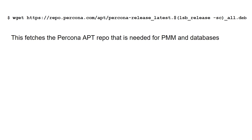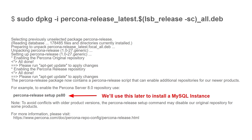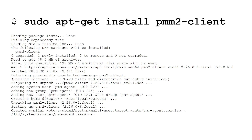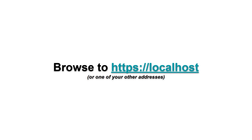Now we need to get the Percona APT repo that we're going to need to install PMM and any Percona branches of the databases that you want. Notice that it warns you how to set up MySQL, and we'll follow that later. Once we've installed the new repo, we have to run apt-get update. Once we have the repo ready, we can use it to install the PMM2 client. Once we have the client, we need to configure everything — we're telling the server our username and password at the localhost. And once we have that done, we can browse to the localhost and take a look at the screen.